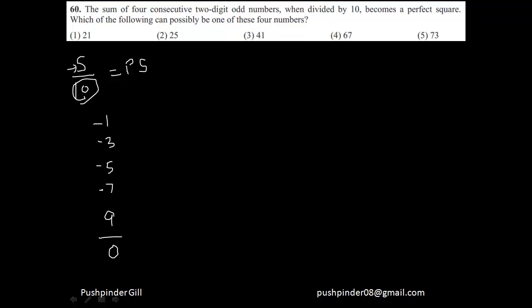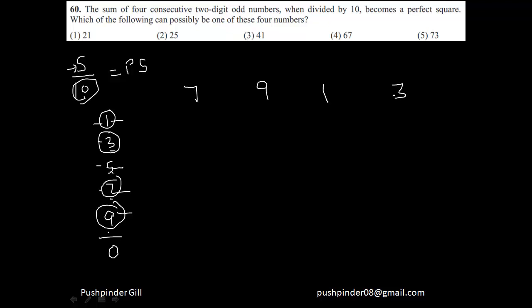...that gives me 1+3+5+7 = 16, which is not divisible by 10. If I use 3, 5, 7, 9, that gives me 24, also not divisible by 10. If I use 5, 7, 9, and 1, that gives me 5+7+9+1 = 22, also not divisible by 10. However, if I use 7, 9, 1, and 3, then 7+9+1+3 = 20, which is divisible by 10. So the last digits must be 7, 9, 1, and 3 — these are the consecutive odd number endings that give a sum divisible by 10.